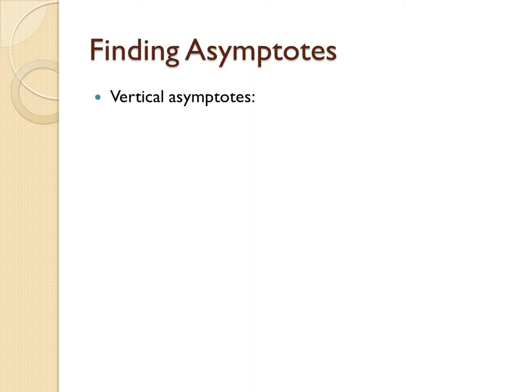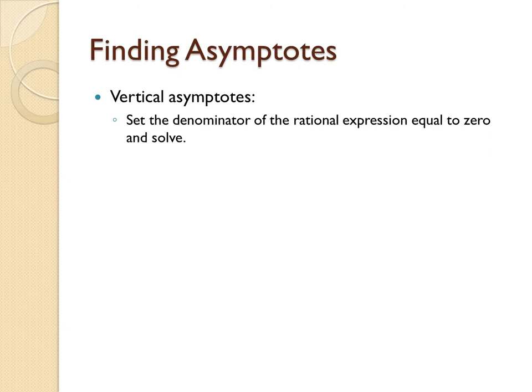The first is a vertical asymptote, which you can find by setting the denominator of the rational expression to be equal to 0 and solving the resulting equation. The second is a horizontal asymptote, and this requires a little bit more thought to solve.